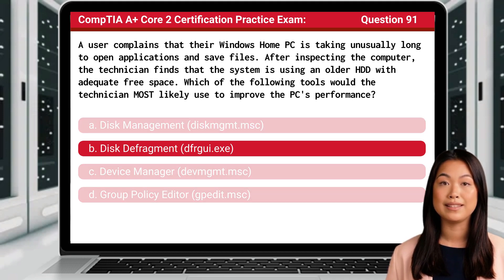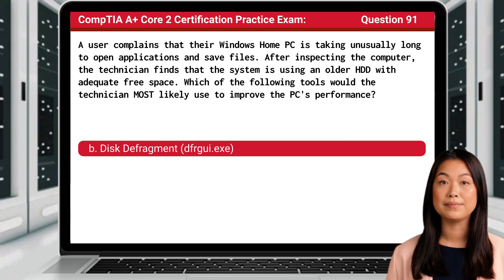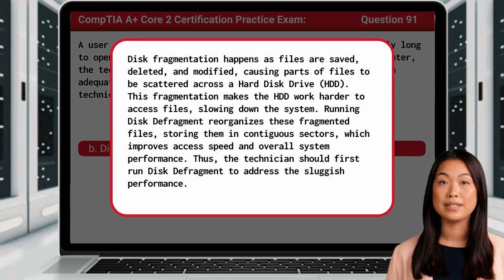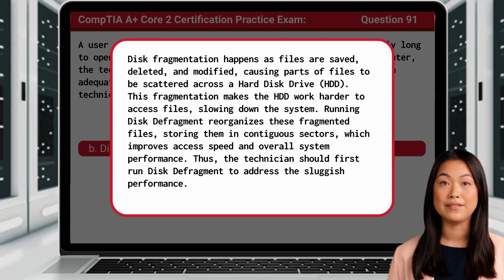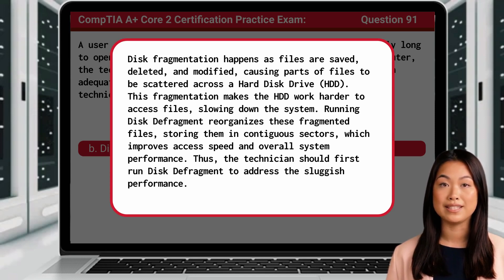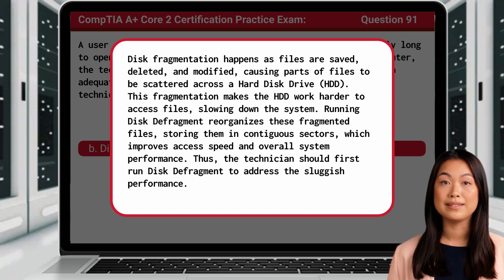The answer is B, Disk Defragment. Disk fragmentation happens as files are saved, deleted, and modified, causing parts of files to be scattered across a hard disk drive, or HDD. This fragmentation makes the HDD work harder to access files, slowing down the system. Running Disk Defragment reorganizes these fragmented files, storing them in contiguous sectors, which improves access speed and overall system performance. Thus, the technician should first run Disk Defragment to address the sluggish performance.